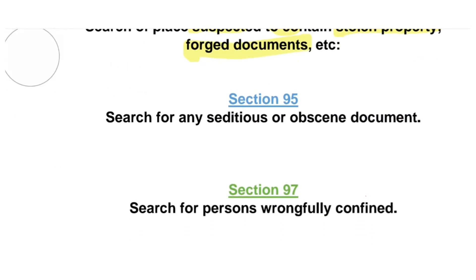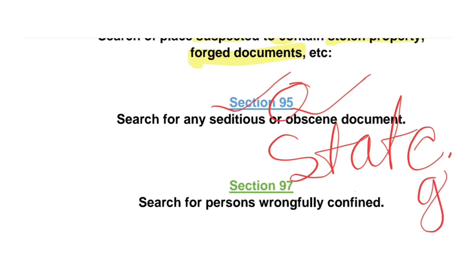Now let's come to Section 95, which deals with search for any seditious or obscene documents. If any such publication has been made that comes under the purview of seditious or obscene material — something so thought-provoking that it can disturb the peace of any community and disrupt public tranquility — the state government can issue a search warrant under Section 95 of the Code of Criminal Procedure in order to seize and forfeit such documents. Note carefully: it is the state government that issues the warrant under Section 95.